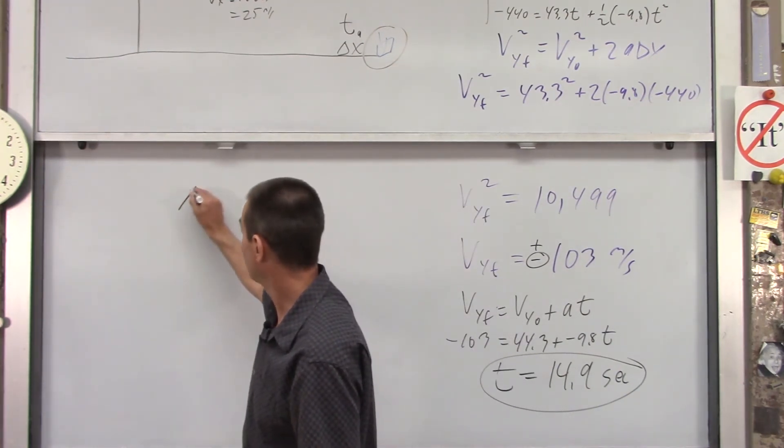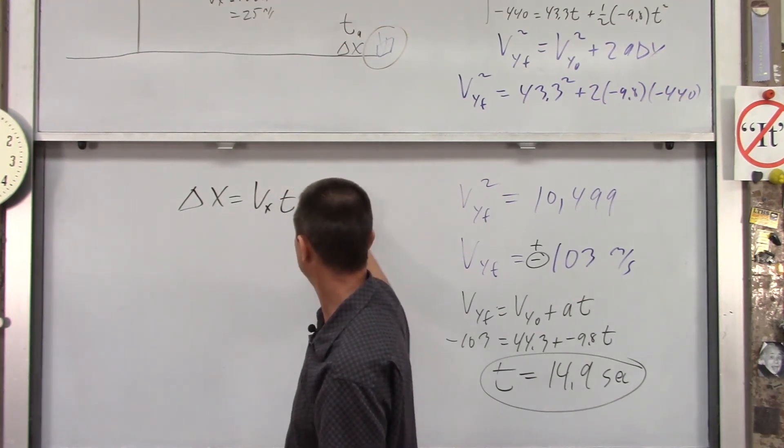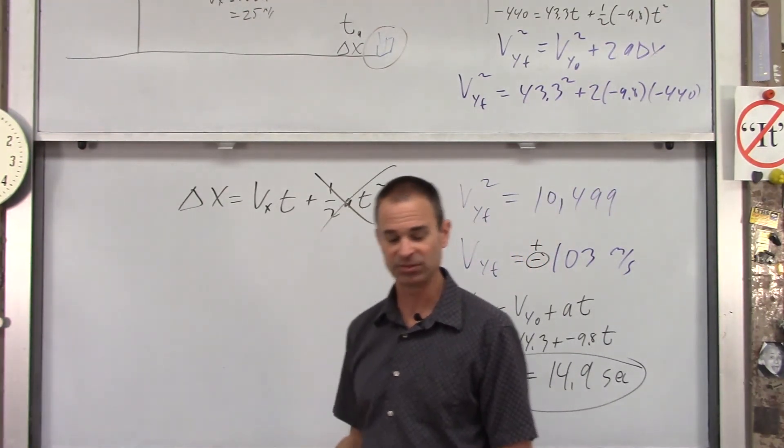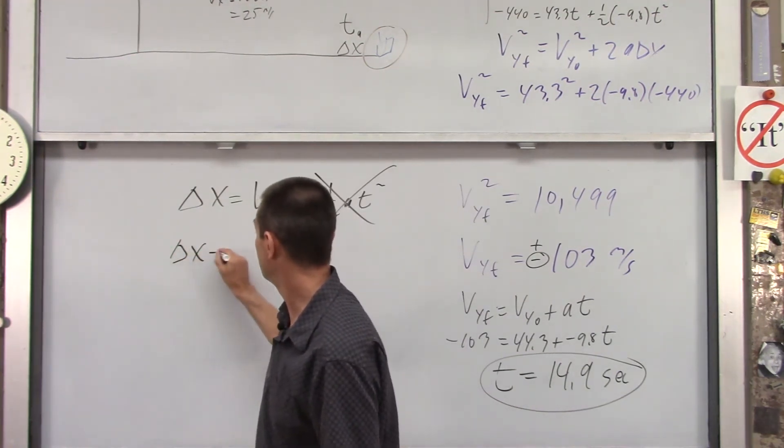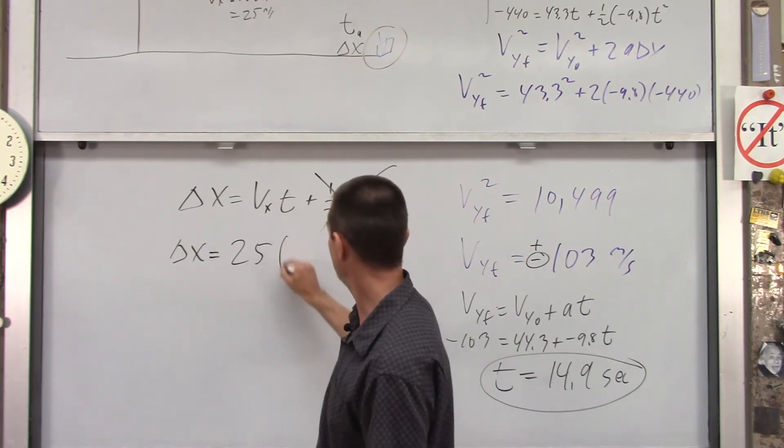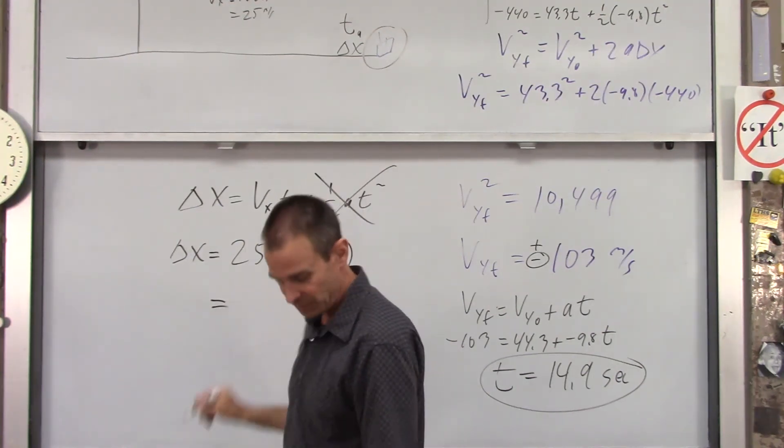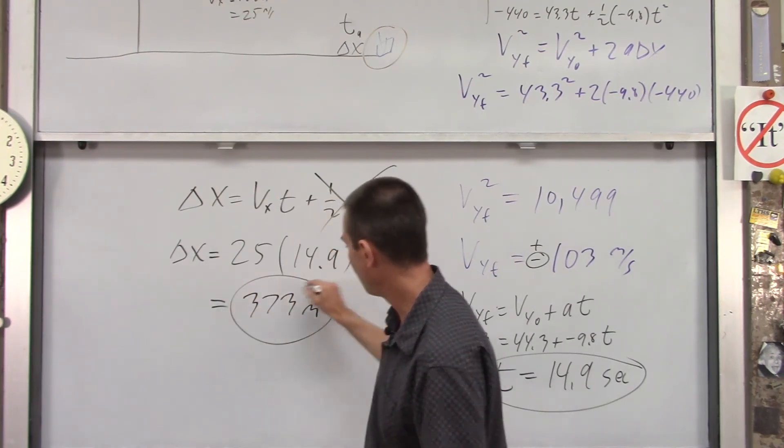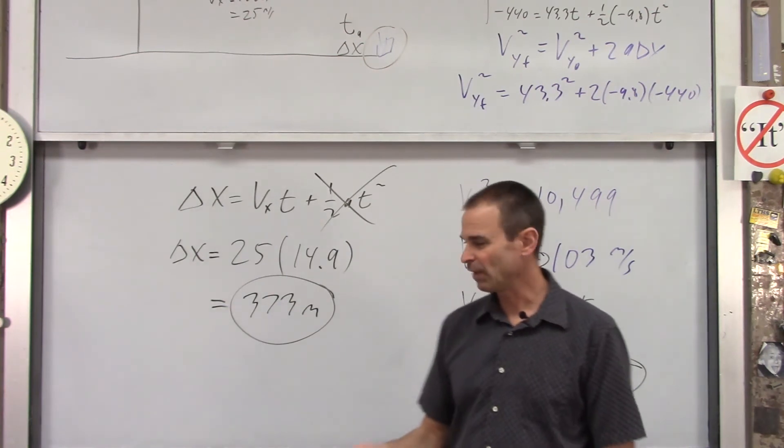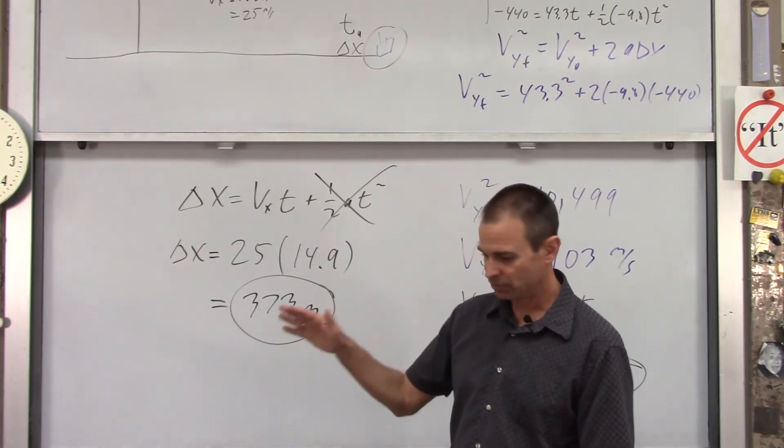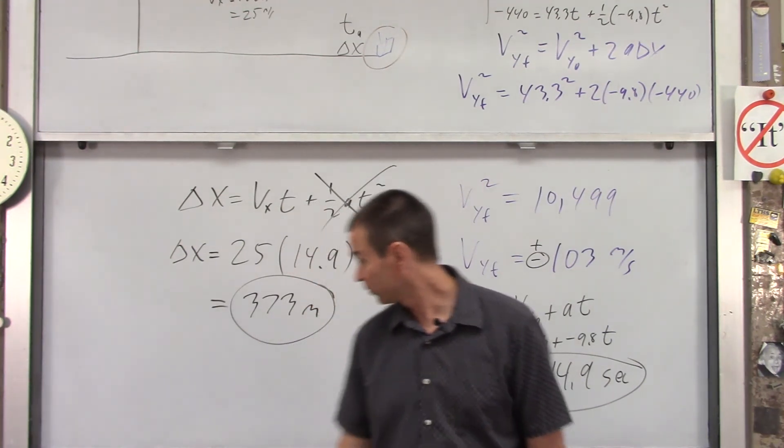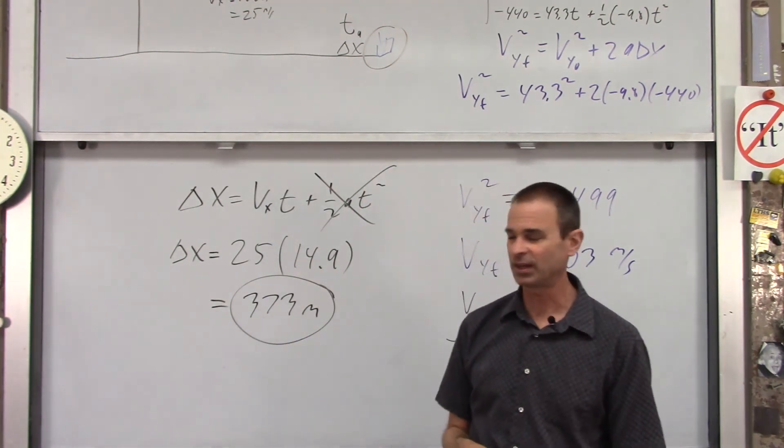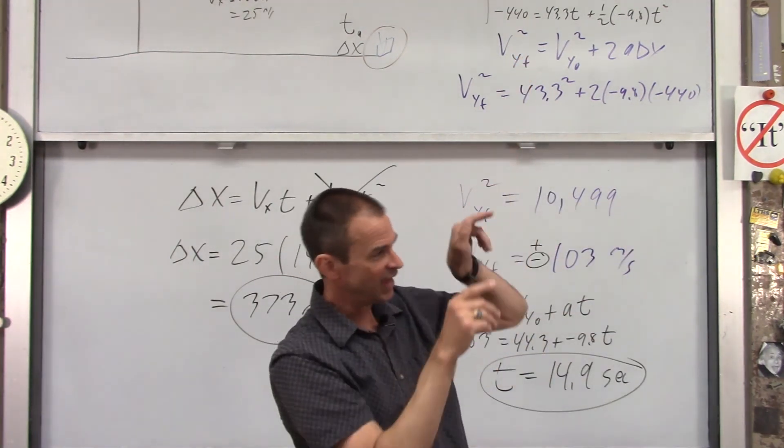Where does it land? Well, for the x direction, delta x equals vxt plus one half at squared. Remember, a in the x direction is zero. There's no horizontal acceleration, because the last we checked, gravity points down. So, you got delta x equals vx, which we figured out to be 25. And then we just got our time, 14.9. If you multiply those out, delta x ends up being 373 meters away. So, almost a quarter mile away. On a side note, when we launched the book horizontal in the previous problem, the book made it to 474 meters. So, this book is going to fall over 100 meters short of where it would have fallen if we just launched it horizontal at 50 meters per second. So, it's partially because we're aiming so far up that it doesn't have much of a horizontal velocity.